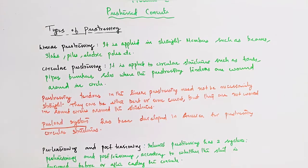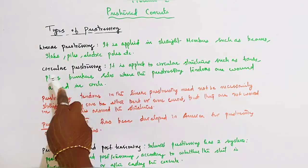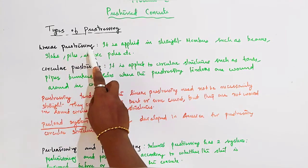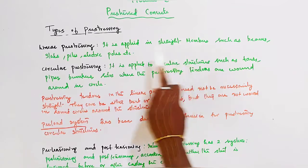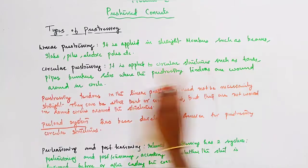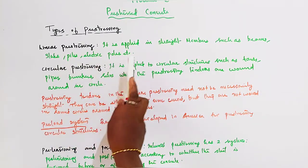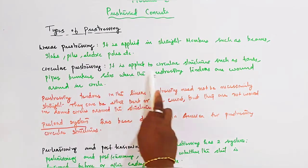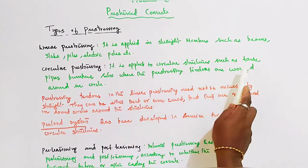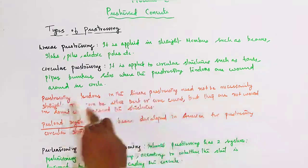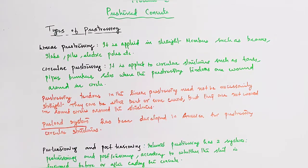Next types of pre-stressing are linear pre-stressing and circular pre-stressing. Linear pre-stressing is applied in straight members. Circular pre-stressing is applied to circular structures such as tanks, pipes, bunkers, and silos, where the pre-stressing tendons are wound around in circles - circular shape wound around in circles.